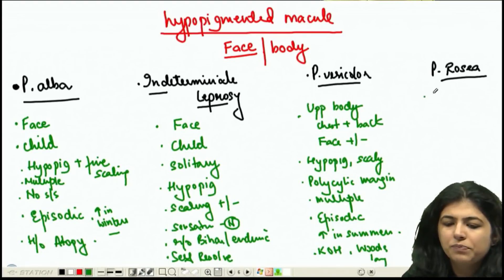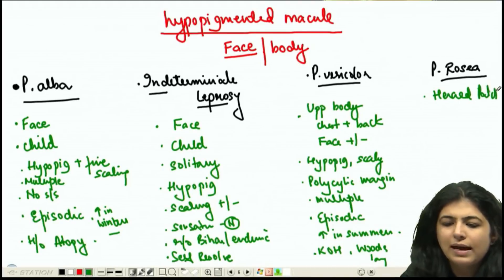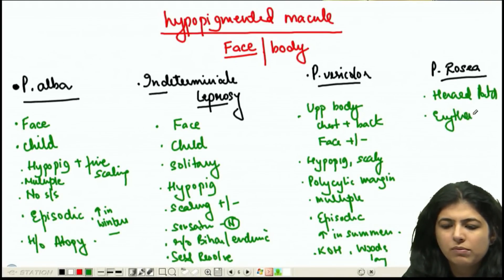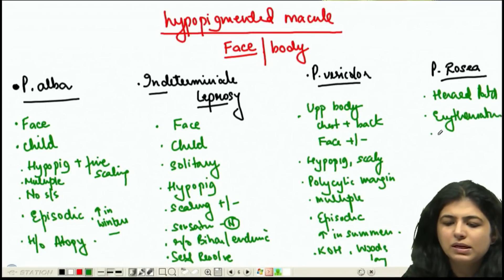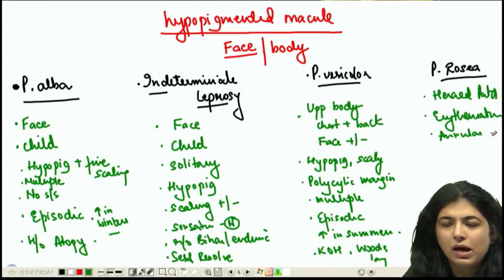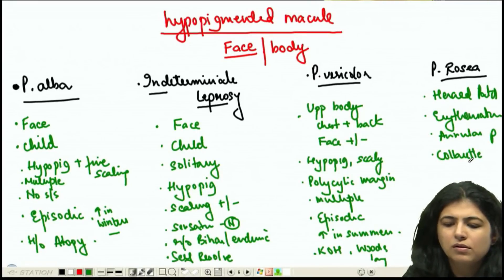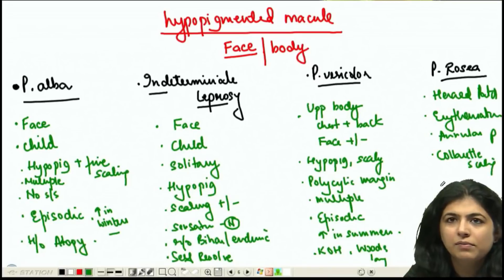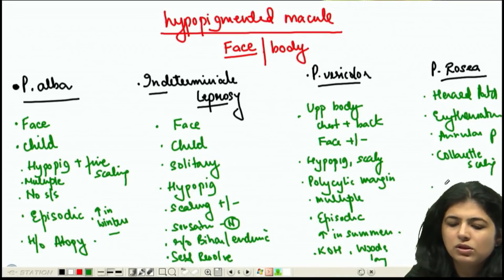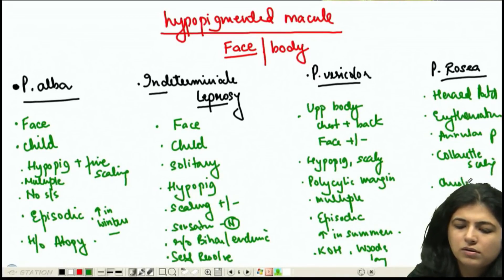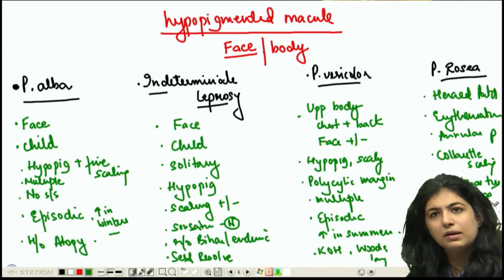Pityriasis rosea will have a history of a herald patch. The lesions will actually be erythematous, not hypopigmented — annular plaques with collarette scaling with a Christmas tree appearance.